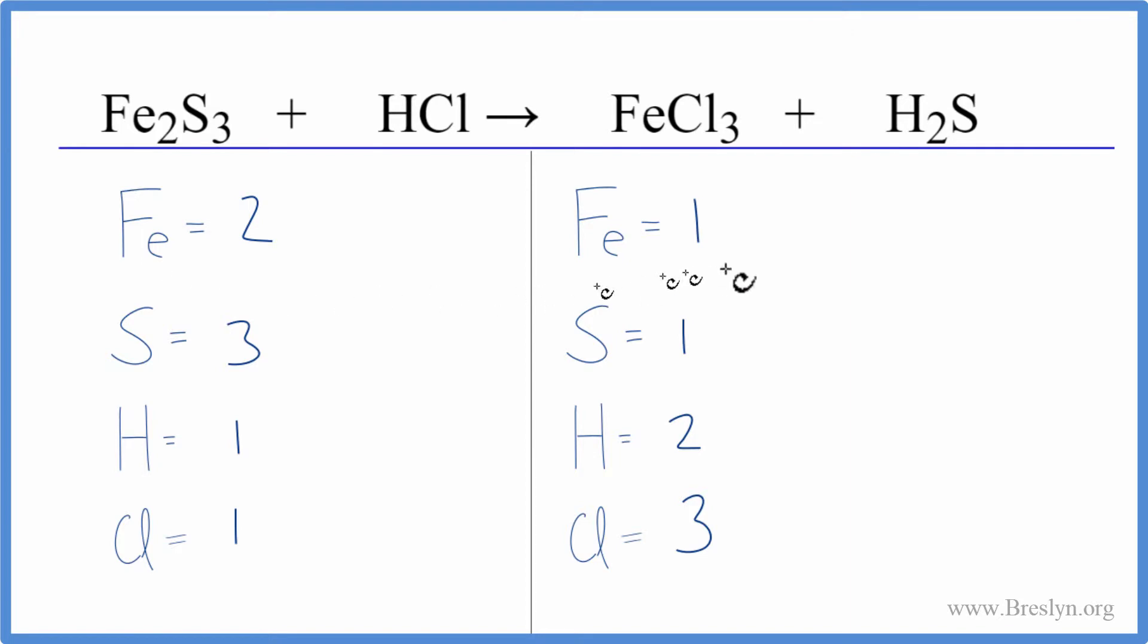Let's balance the iron first. We could put a 2 as our coefficient. 1 times 2 would give us two iron atoms, and then this 2 applies to everything, so 3 times 2 gives us six chlorine atoms.